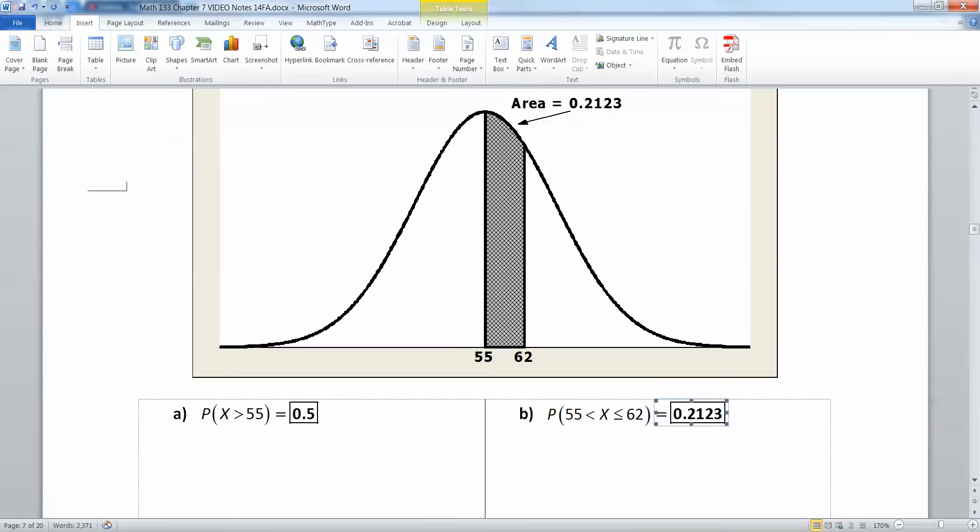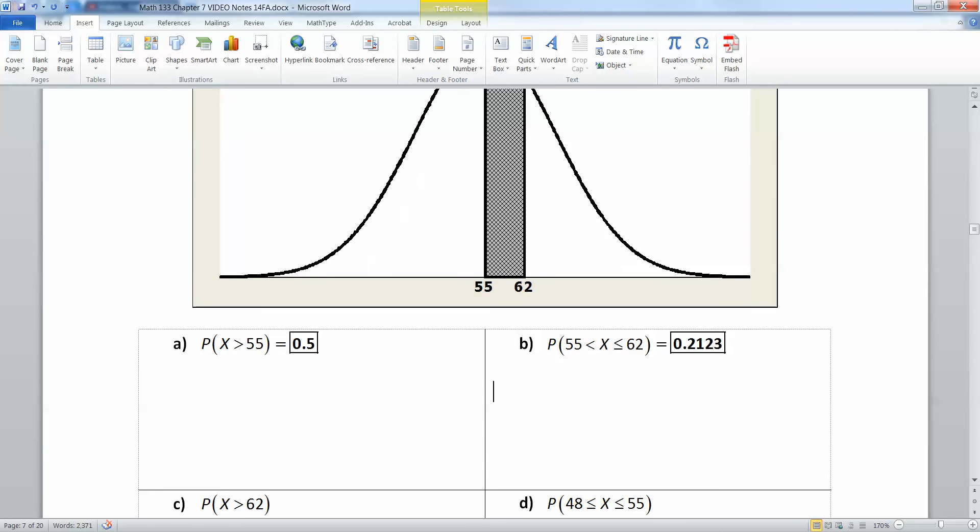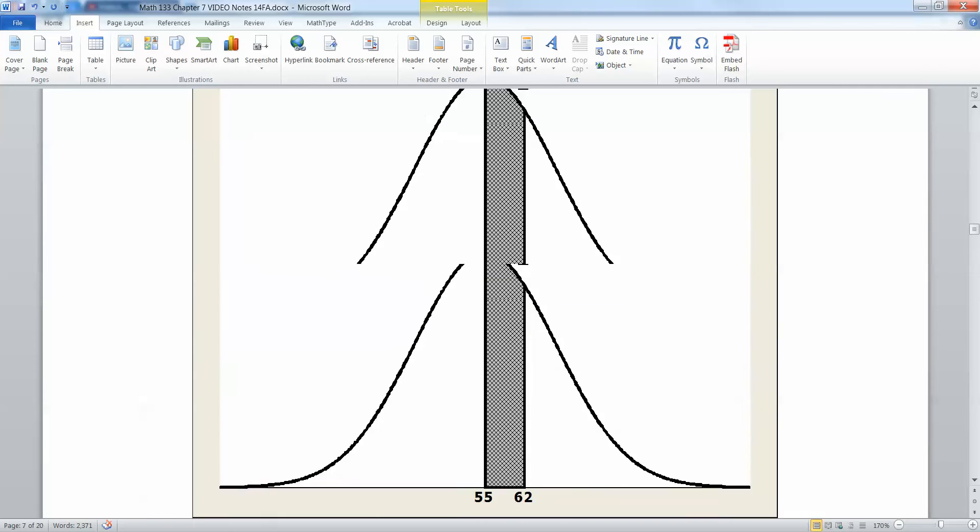Now notice that it actually doesn't matter whether you have less than or less than or equal to, because equal to of course has no area. The lines that you've drawn and shaded there have an area so they don't count.